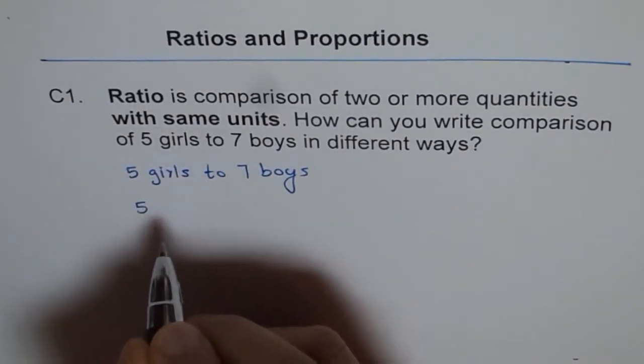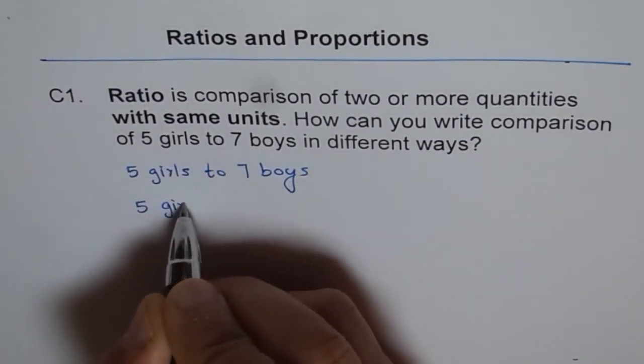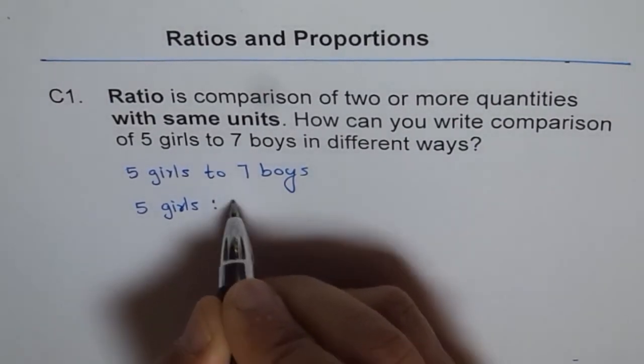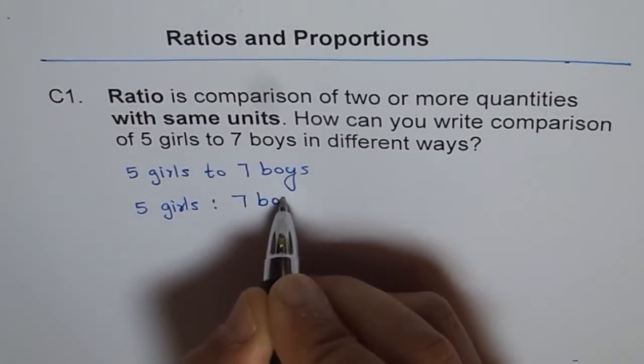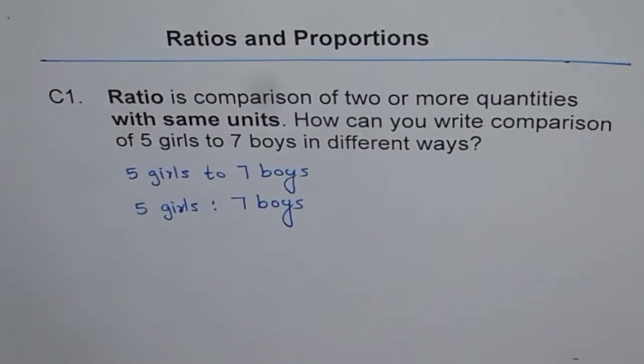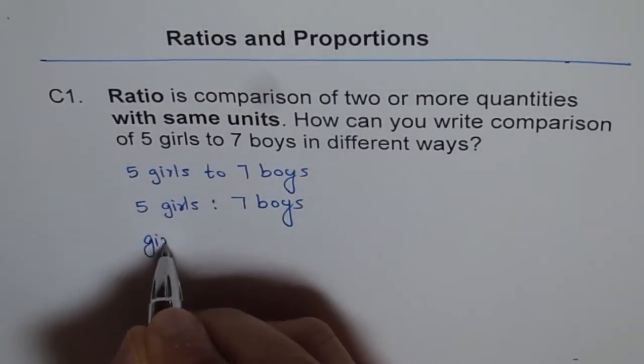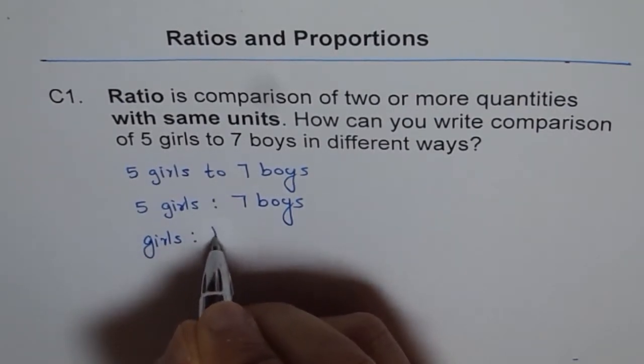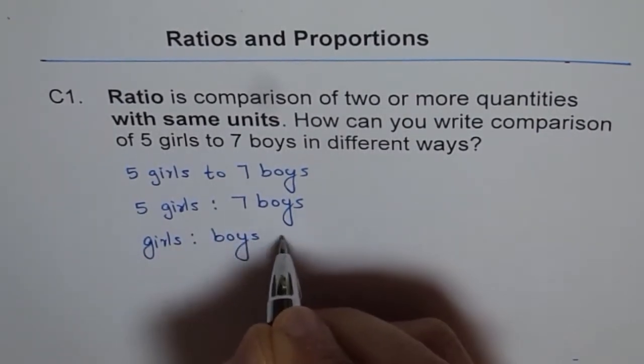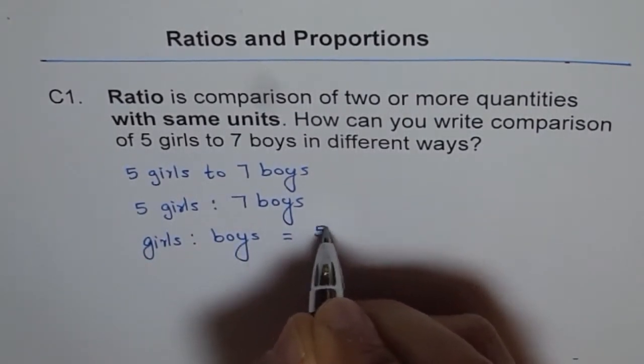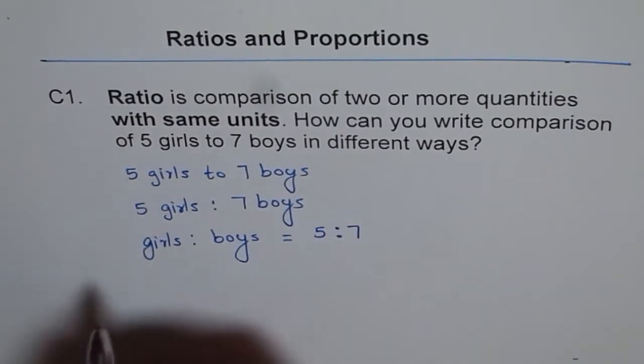We can also write five girls is to seven boys - that is another way of writing the same thing. Sometimes we can also write like this: the ratio of girls to boys is equal to five is to seven. That is another way of writing.